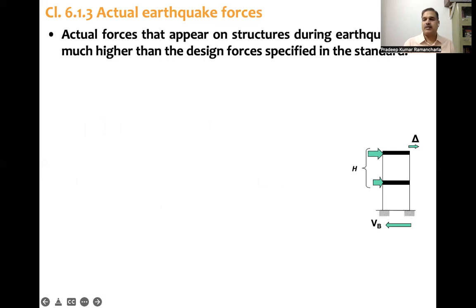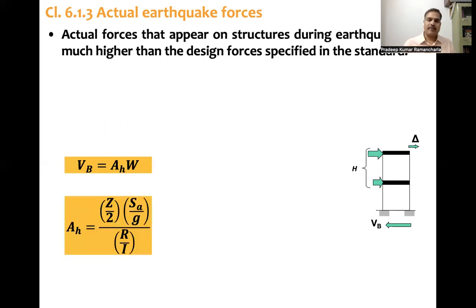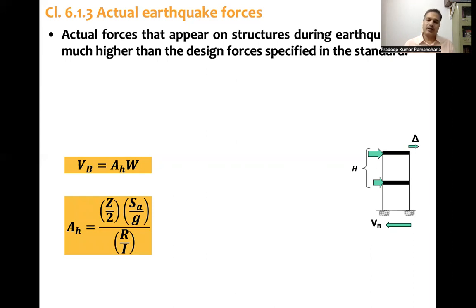Let's compute V_B, the design base shear. The formula is: V_B equals the acceleration coefficient multiplied by the seismic weight. The acceleration coefficient is (Z/2) × (S_A/g) × (R/I), where Z/2 indicates design for the DBE, S_A/g is the spectral acceleration read from the design spectrum using the natural period of the building, R is the response reduction factor, and I is the importance factor.